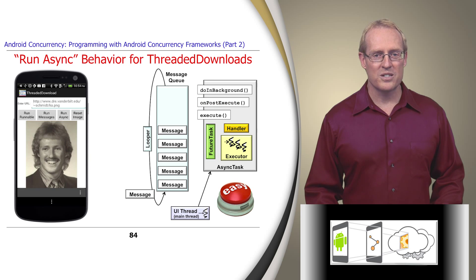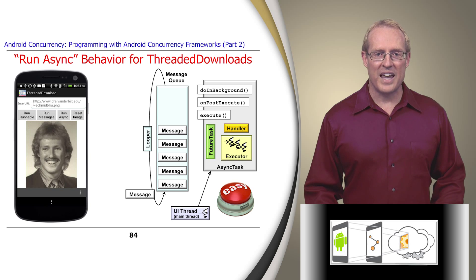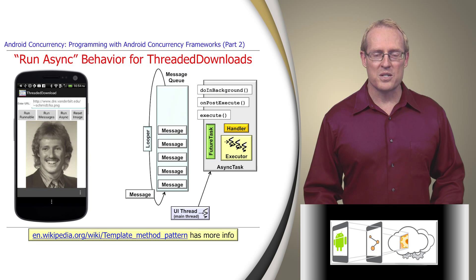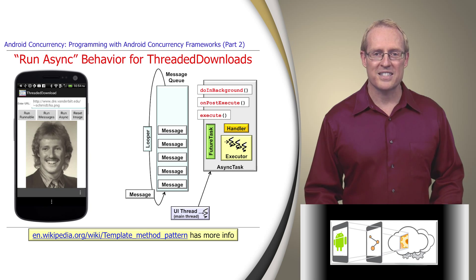Compared with the Hammer-based solutions, especially the second one that sends and handles messages, the AsyncTask solution is easy to program since there's no need to manipulate threads, messages, runnables, or handlers explicitly. Instead, the framework uses the template method pattern to allow application developers to customize hook methods inherited from the AsyncTask base class.